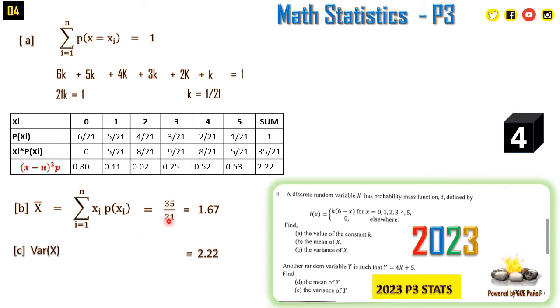To find the variance, the variance is defined as the summation of each variable's deviation squared times their probabilities. So we have (0 - 1.67)² × 6/21 + (1 - 1.67)² × 5/21 + (2 - 1.67)² × 4/21. When we do this for all of these different variables, we are going to have the sum as 2.22, which is actually the variance.